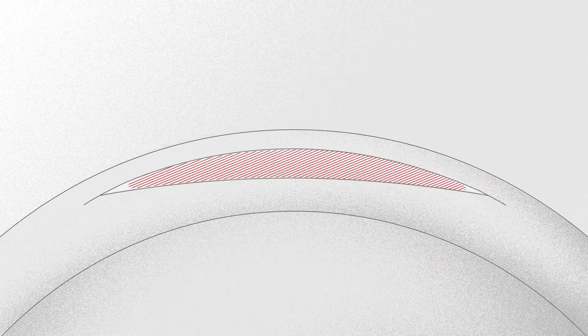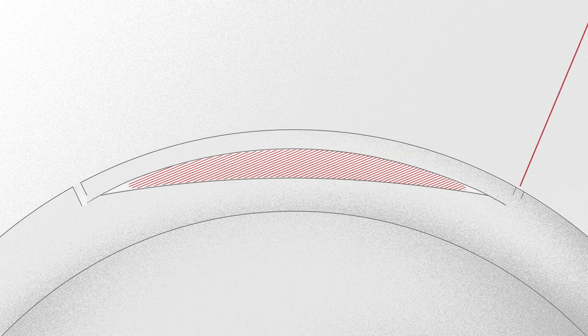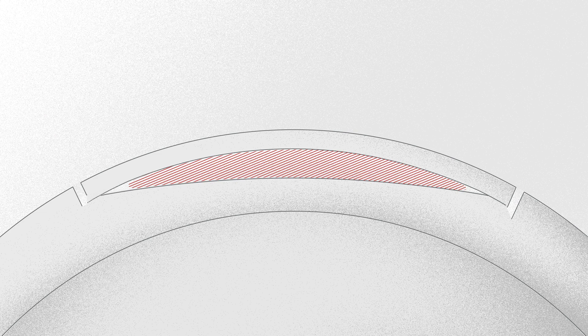Depending on the surgeon's preferences, one or two incisions are made. Guiding tunnels are integrated to make it easier to identify the anterior and posterior planes.